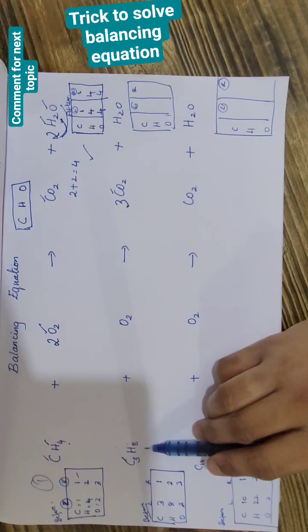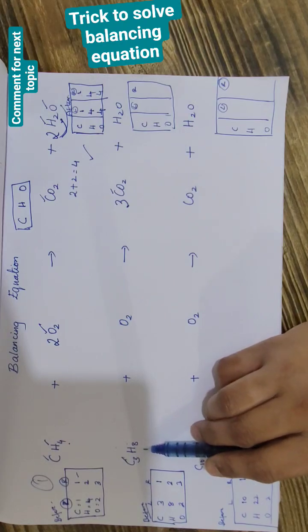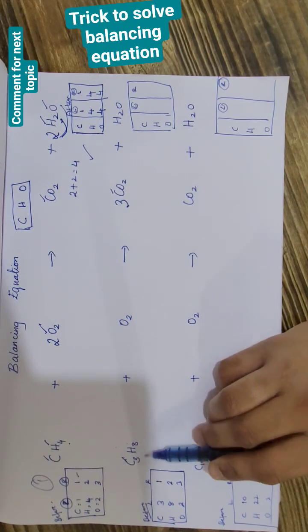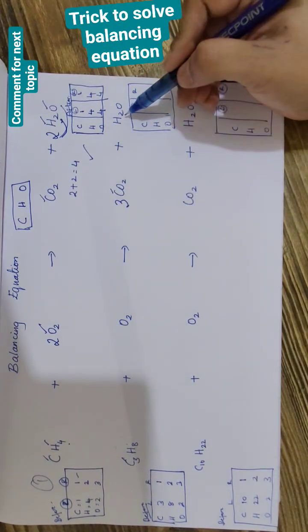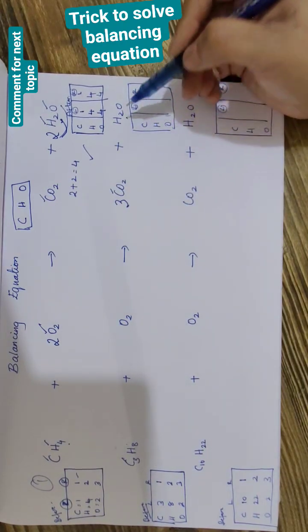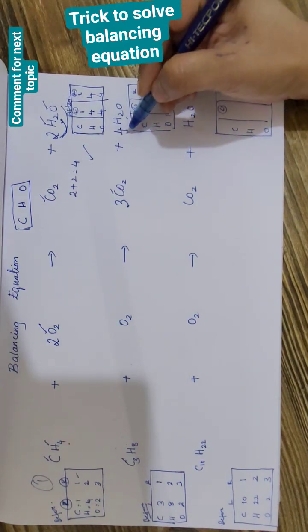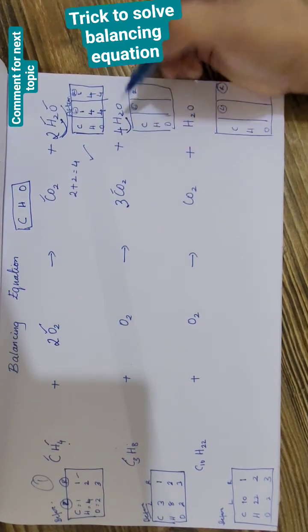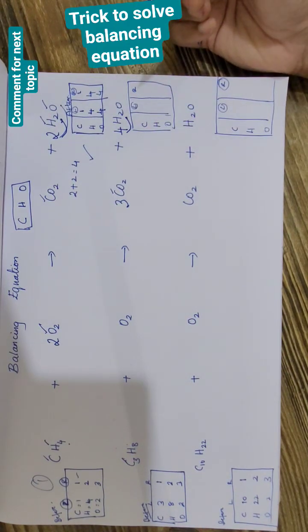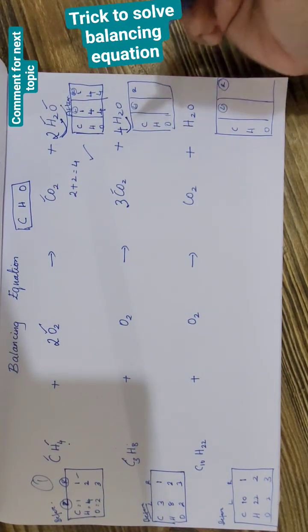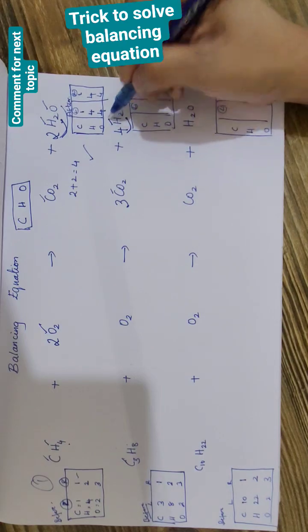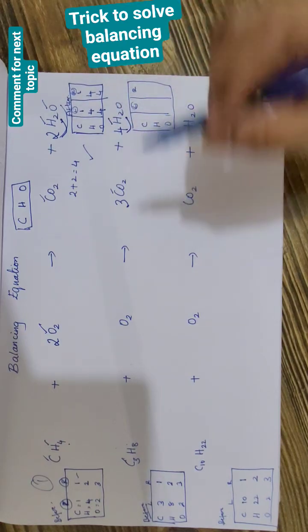How many hydrogens do I have now? Eight hydrogens on the left side and two hydrogens on the right side. I add four in front of hydrogen, so four times two makes eight. Hydrogen is balanced.